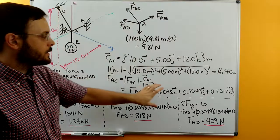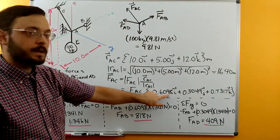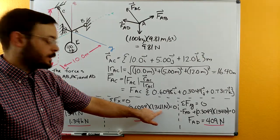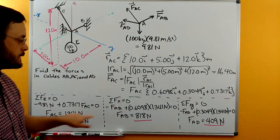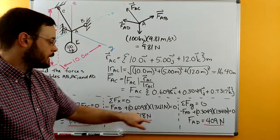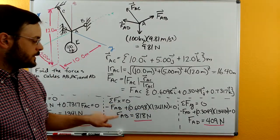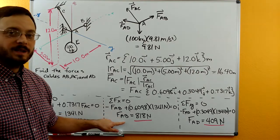So again we'll grab what sits in front of the i here so 0.6098 times our FAC. We already know what FAC is so we can go ahead and plug it in. The only thing that we don't know in this equation is FAB. We can solve for FAB. We get FAB is 818 newtons.